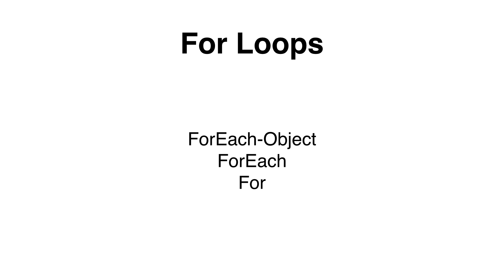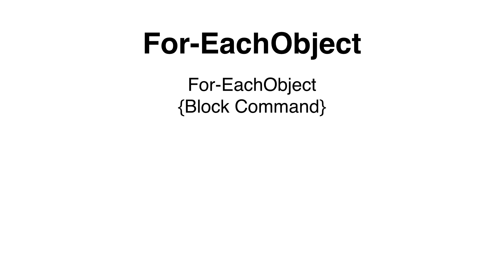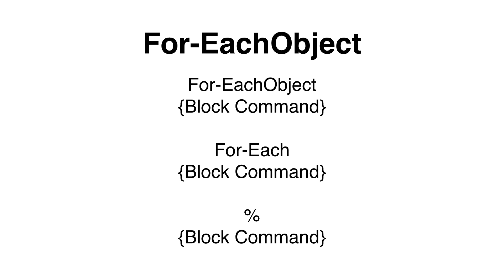Next up is the for statement. It is less complex and has less arguments than the forEach statement. The forEach object is used on the pipeline. It can use the information provided for the first pipeline command to go through each object to accomplish something. To use the forEach object, you would specify forEach object, and then in the command block, you specify what should happen for every single object that it is looping through. The alias for the forEach object is forEach or the percent sign, but please make sure that you don't confuse this with the for statement, since the syntax for the forEach is completely different.